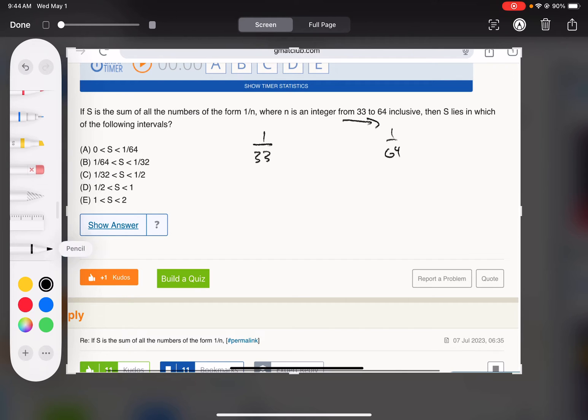What if they were all 1 over 64? What would the sum be? Well, there's how many numbers? There's 32 numbers. We know that by the subtract and add one rule. It's 32 values here.